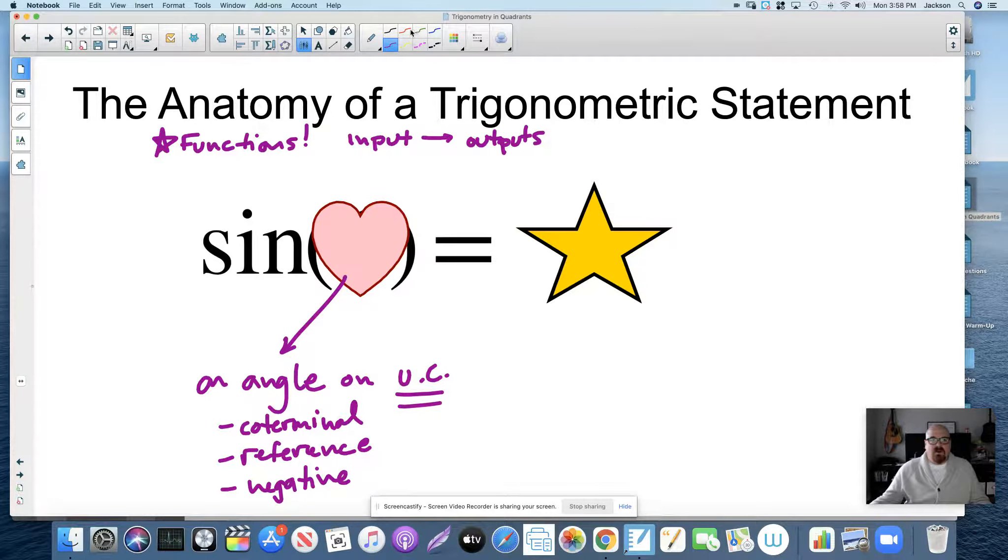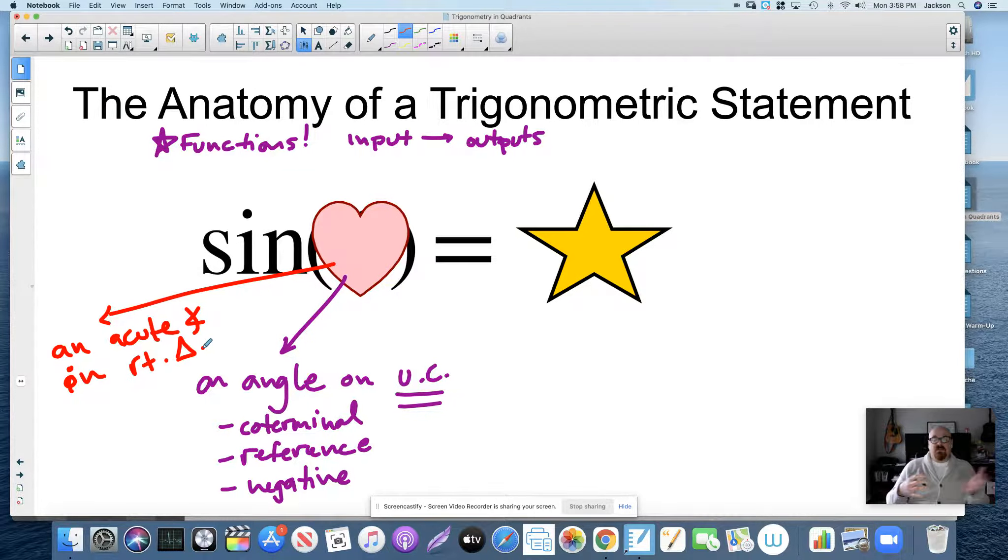But it could also, it's still an angle, but it could be an acute angle in a right triangle. So right triangle trigonometry still exists. We don't completely ignore it when we're doing stuff with the unit circle. So keep that in the back of your mind, that the value that is inside that function. A lot of times, I put a heart. The reason I put a heart is because I don't want you to focus on x or theta or t or whatever could go in there. I just use the basic symbol that everybody's familiar with. Whatever goes here is an angle. Those are our inputs.